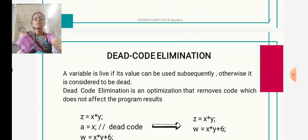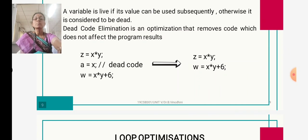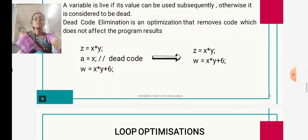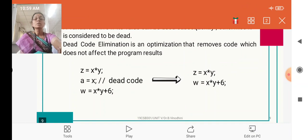Next is dead code elimination. A variable is live if its value can be used subsequently; otherwise, it is considered dead. For such dead statements, we eliminate them to improve code efficiency. For example, if we have 'a = x' and that variable 'a' is not used anywhere, then that is dead code. We eliminate that statement from our code, which improves efficiency. These four methods — common sub-expression elimination, copy propagation, dead code elimination, and constant folding — come under function-preserving transformation.